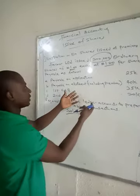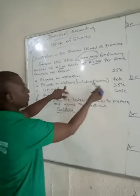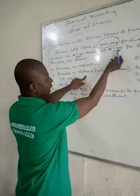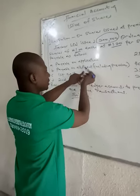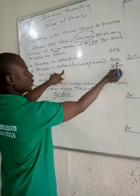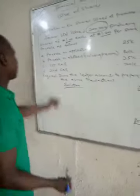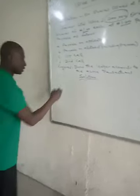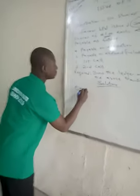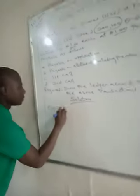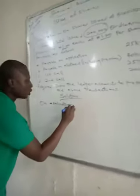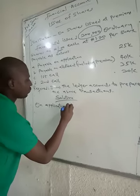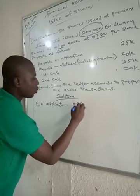The payment schedule is as follows: on application, allotment including premium gives 40 kobo. Since our premium is 20 kobo, that means allotment is 20 kobo — they have combined the two. First call is 35 kobo. This is very important because you need to prepare your workings first before you know the amount going to each account.